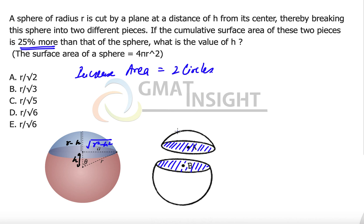So here the area of these two circles will be two times pi times r square minus h square. And this increased area is equal to 25% of the area of the sphere. So let's quickly calculate that. This becomes 2π(r² - h²), while the 25%, so this part becomes this, and 25% means one-fourth of the total surface area of the sphere, which is 4πr².